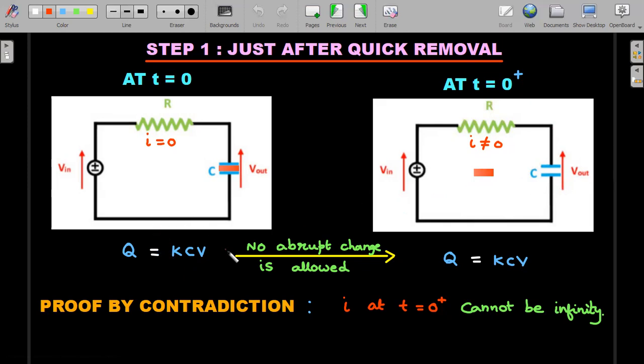The idea is to understand that the charge actually doesn't abruptly change. That is what I have written: from t equals zero to t equals zero plus, the value of the charge remains the same. No abrupt change in the charge is allowed during this so-called dt amount of time, a small infinitesimal amount of time.